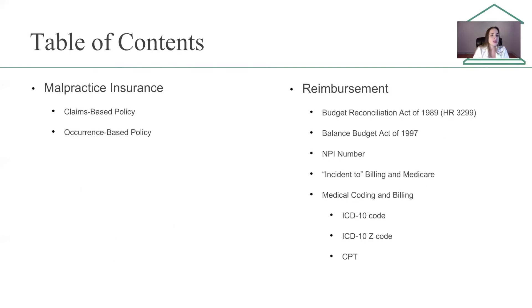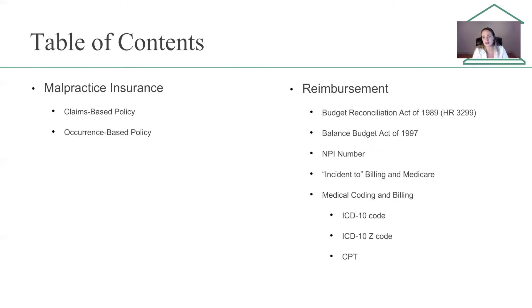We're also going to talk about malpractice insurance — the difference between claims-based policy and occurrence-based policy. We'll discuss reimbursement, the Budget Reconciliation Act of 1989, the Balanced Budget Act of 1997, the NPI number and what it is, incident-to billing and Medicare, and medical coding and billing — very briefly: ICD-10 codes, ICD-10-Z codes, and CPT codes.